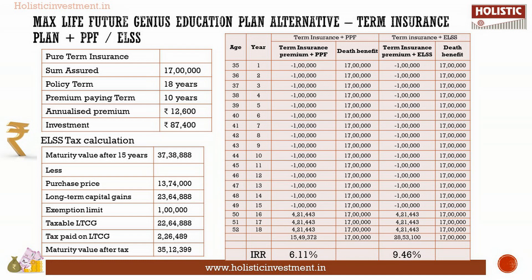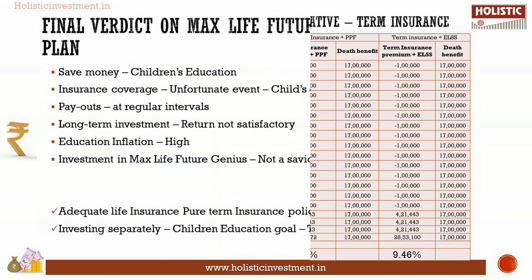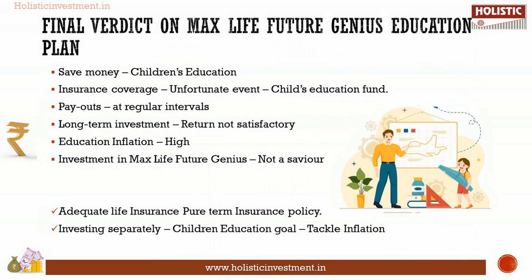The IRR under pure term insurance along with PPF investment is 6.11 percent. The IRR under pure term insurance along with ELSS investment is 9.46 percent — this is the post-tax return. This IRR analysis shows that buying a ready-made child education plan will not aid you in meeting your child's dream. Ideally, you need an adequate life cover to protect your family, along with a goal-based investment portfolio to help you achieve all your dreams.